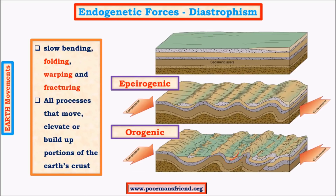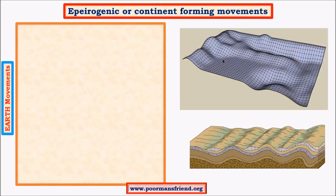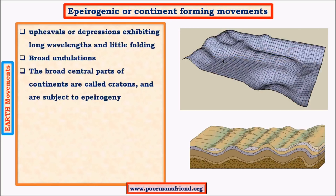The folds can be towards the center of the earth or away from it. Folds directed towards the earth's center are called synclines, while folds directed away from the earth's center are called anticlines. These two terms appear frequently in textbooks.